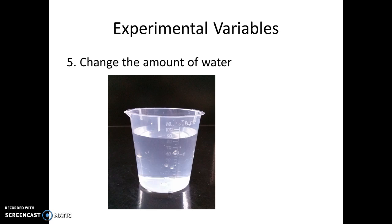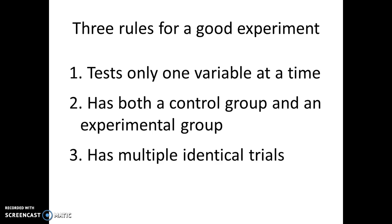Now, some general rules for designing the experiment. You have to write your own procedure and design your own experiment. Three rules for a good experiment: first, you can only test one variable at a time, so you only get to use one experimental variable per experiment — there's not enough time to test all of them. You also have to have a control group and an experimental group. I suggest repeating each group three times, for a total of six Alka-Seltzer tablets.